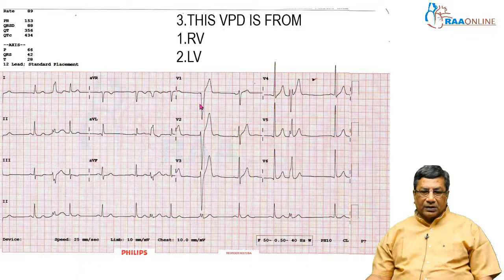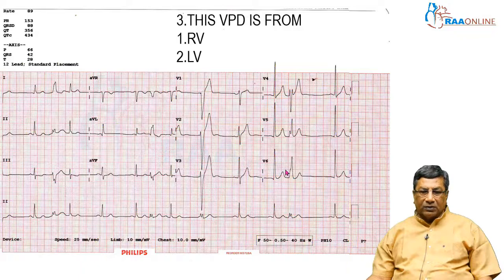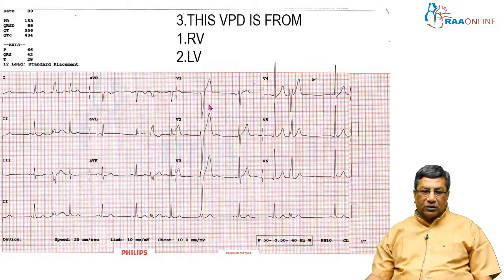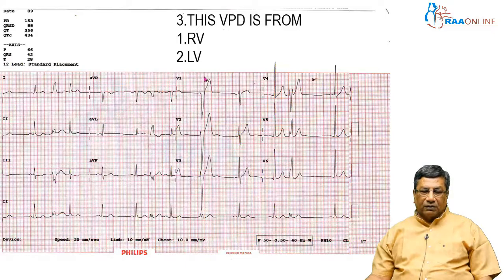Why? Because this premature beat has got very wide QRS, and it looks differently from the sinus beat. We are asking you from which ventricle this VPD is coming from. For that, I asked you to see V1. If the V1 is negative, the VPD is arising from the right ventricle. If the V1 is positive, it is arising from the left ventricle.